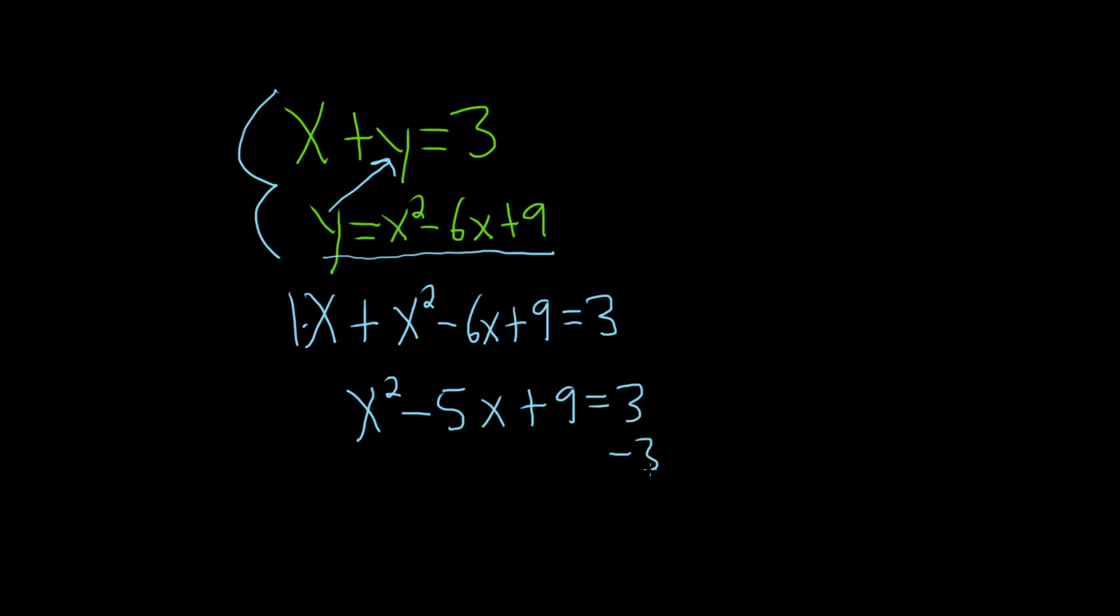Let's go ahead and subtract the 3 so we can try to factor this. So we have x squared minus 5x plus 6, and that's equal to 0.